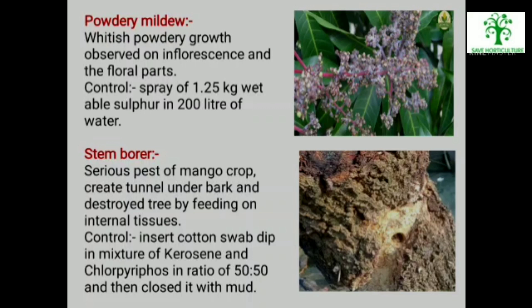Stem Borer: A serious pest of mango crop. It creates tunnels under the bark and destroys the tree by feeding on internal tissue. Larvae of stem borer are observed outside the tunnel. To control stem borer, insert a cotton swab dipped in a mixture of kerosene and chloropyrifos in the ratio of 50:50 and then close it with mud.